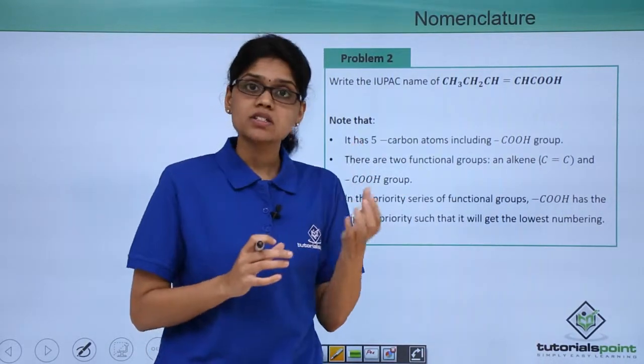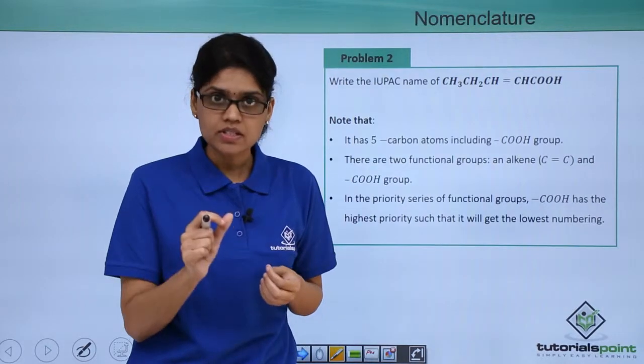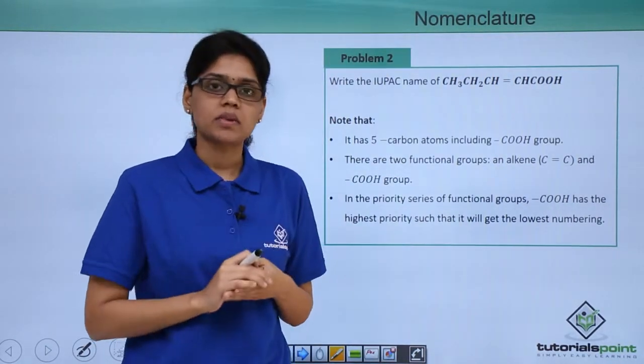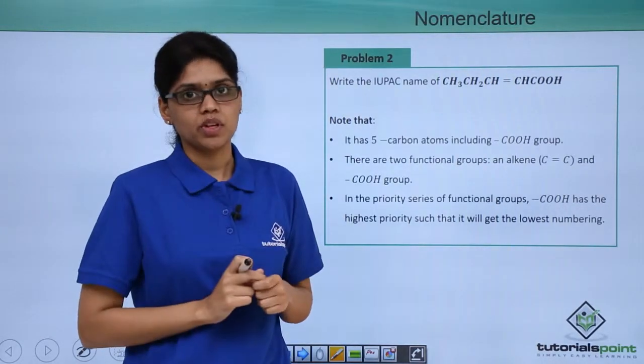The number of carbon will give you the middle part or the main part of the IUPAC name. The principal functional group will determine your suffix or the root name, and substituents and its positions will determine the prefix or the starting part of your name.